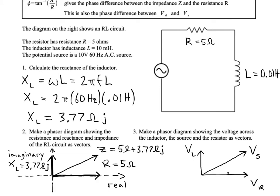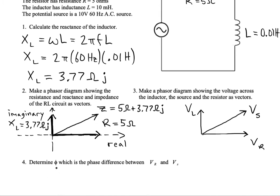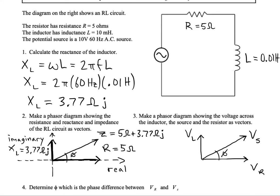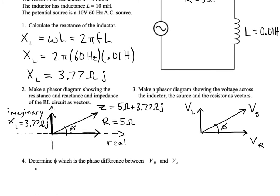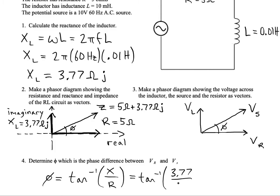These phasor diagrams help us track what the voltage of each component is as time goes on. We'd like to find the phase difference between the resistor voltage and the source voltage — that angle is the same in both diagrams. To find it, we use the formula: phase difference = arctan(reactance / resistance) = arctan(X/R) = arctan(3.77/5), which is about 37 degrees.